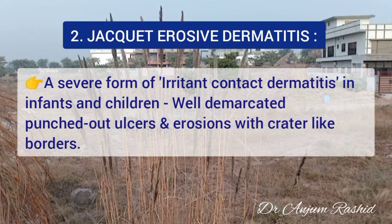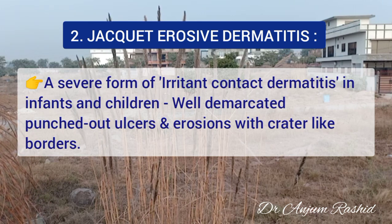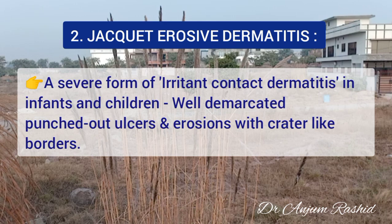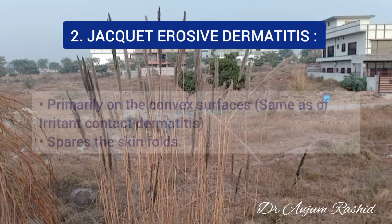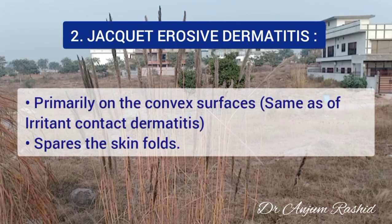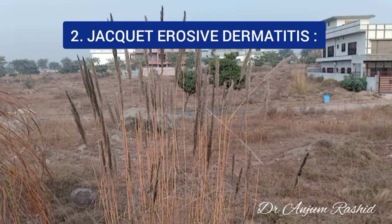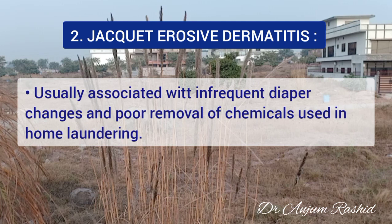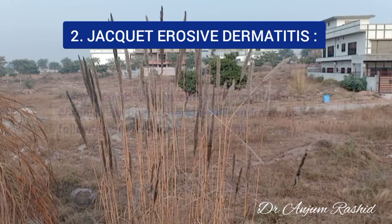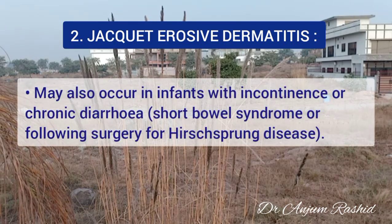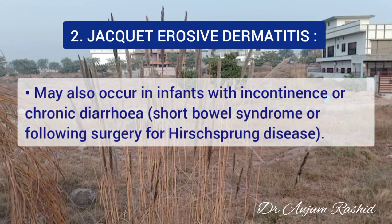The second differential is Jacquet erosive diaper dermatitis. It is a severe form of irritant contact dermatitis in infants and children, presenting with well-demarcated punch-out ulcers and erosions with crater-like borders. It primarily involves the convex surfaces — upper medial thigh, lower abdomen, and buttocks — and spares the skin folds. It is usually associated with infrequent diaper changes and poor removal of chemicals used in home laundering. It may also occur in infants with incontinence or chronic diarrhea, such as in short bowel syndrome or following surgery for Hirschsprung disease.